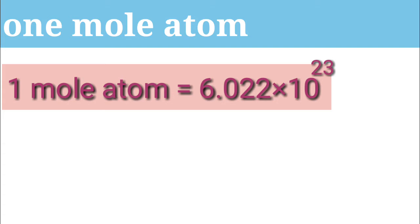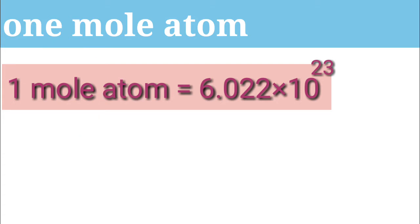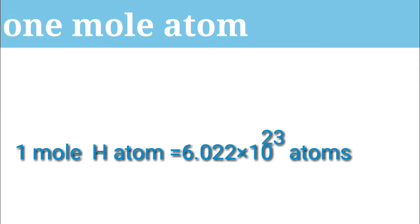Okay, let's see. We have a decent amount of atoms — 6.022 into 10²³ atoms. That's the concept. What is one mole of hydrogen atom? How many atoms? 6.022 into 10²³ atoms. So hydrogen has 6.022 into 10²³ atoms.